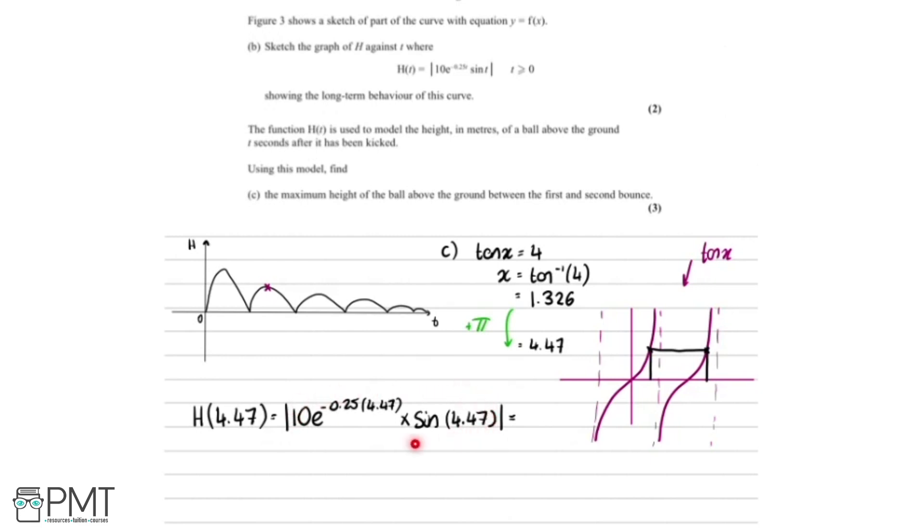So putting that in the calculator, we get that everything inside the modulus signs comes out to minus 3.18. But because it's modulus, the answer is going to be positive 3.18. And it's in metres. So that is the final answer.